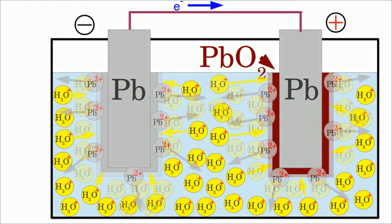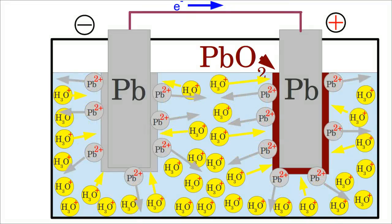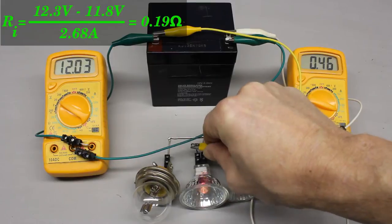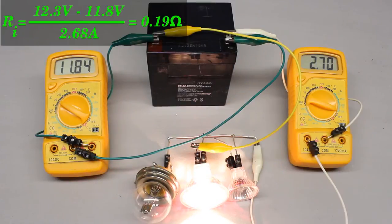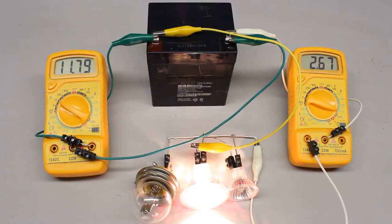The speed of movement of ions inside of the electrolyte is limited, hence the concentration of a certain type of ions around the electrodes is decreasing and so the potential at the output terminals is decreasing too. The higher the current drawn from the battery, the lower the output voltage.